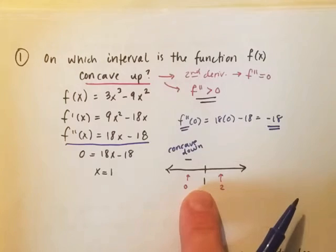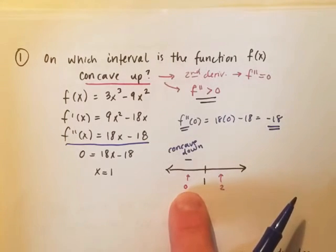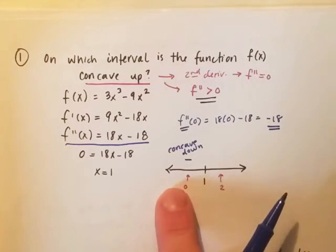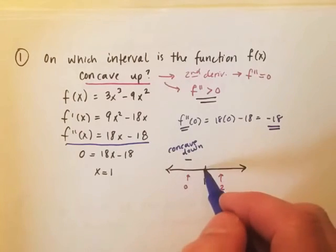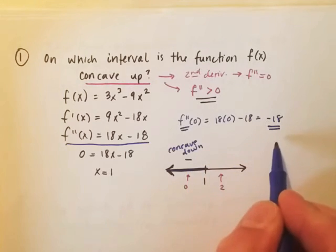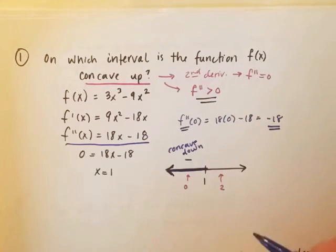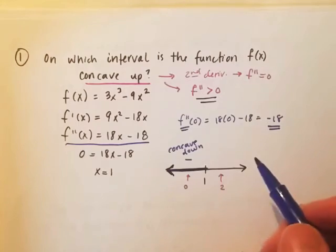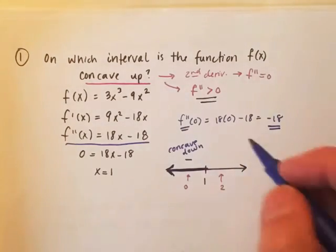Now, we just chose any value that was less than one, like zero. But I could have chosen negative one, negative two, negative three. And any value that I had plugged in this interval, in this direction, would have given me a negative output for f double prime, resulting in a concave down kind of graph.